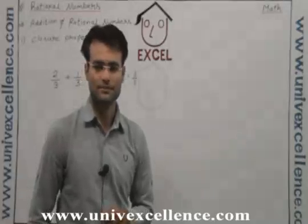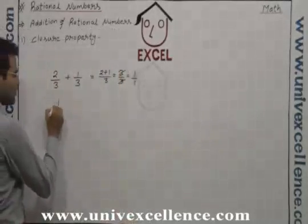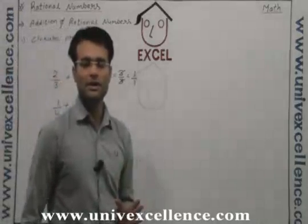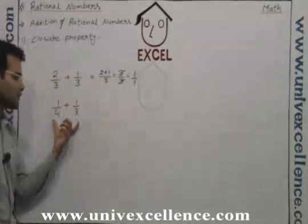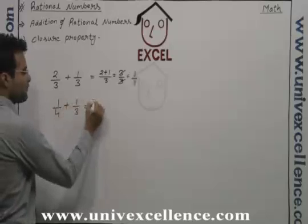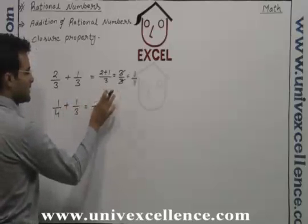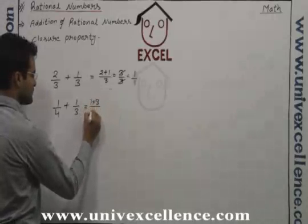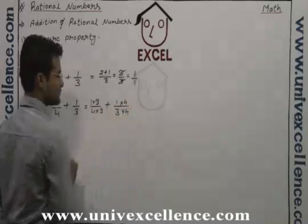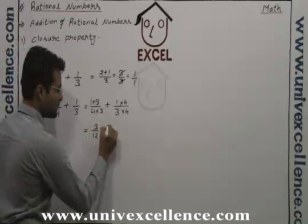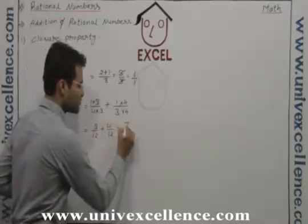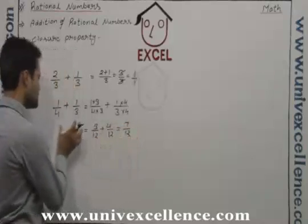Three upon three equals one, and one can be written as one upon one, which is a rational number. Let's take another example: one by four plus one by three. Since the denominators are different, we first make them the same. We multiply one by four by three to get three by twelve, and one by three by four to get four by twelve. Now the denominators are the same, so we add the numerators to get seven by twelve.